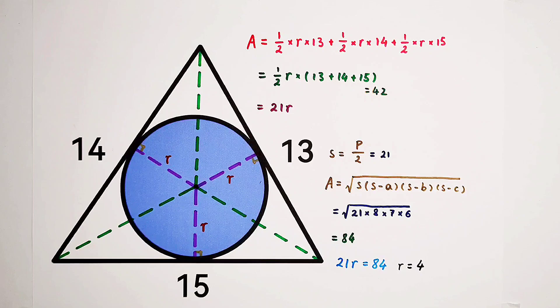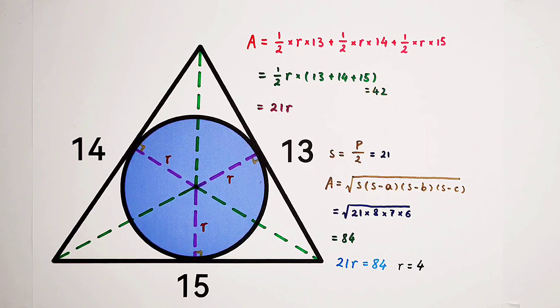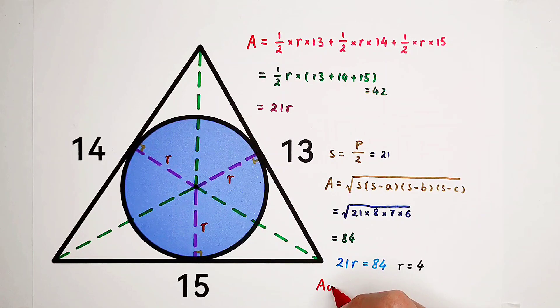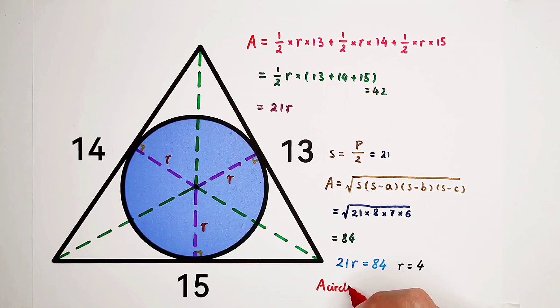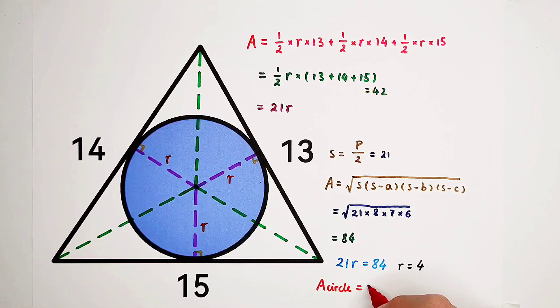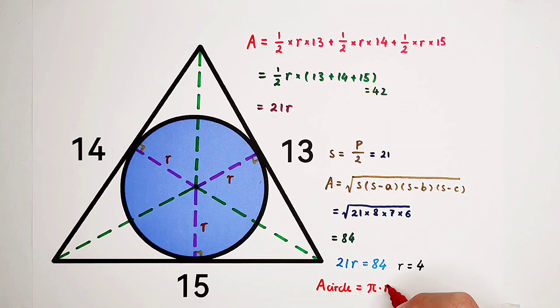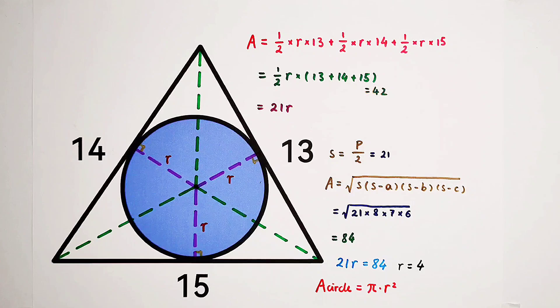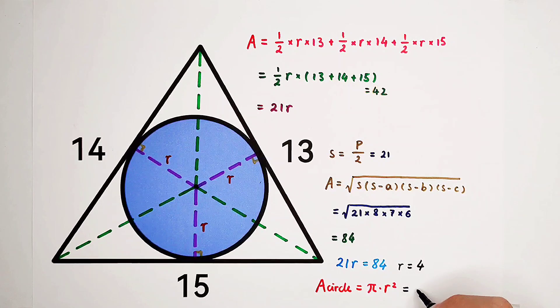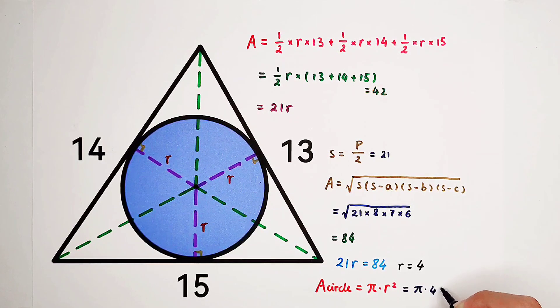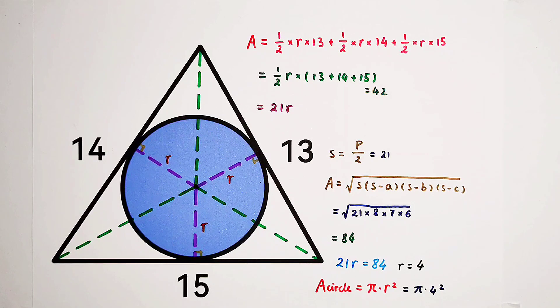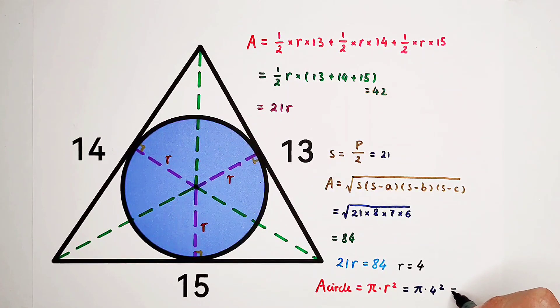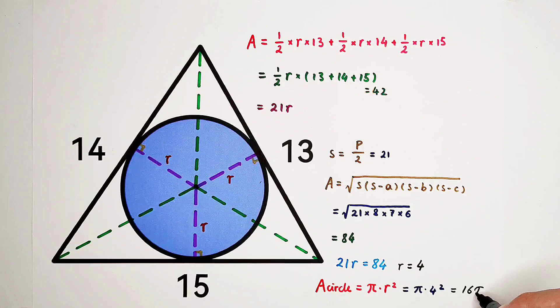Then the area of the circle can be easily solved. The area of the circle is pi times R square. So the final answer is gonna be 16 pi.